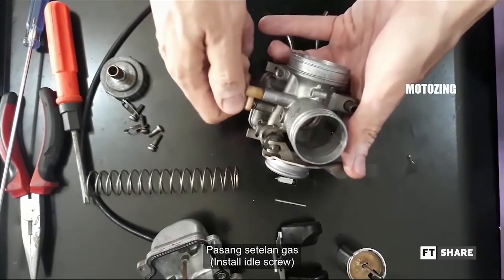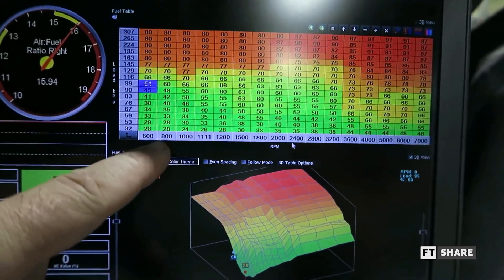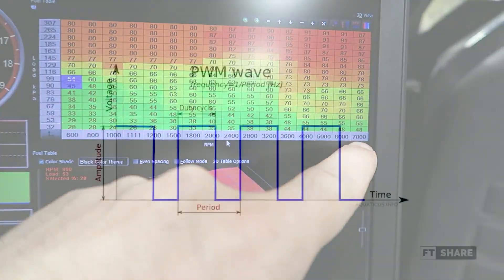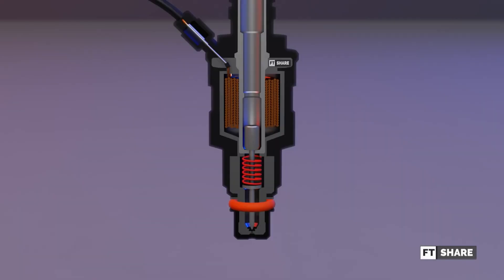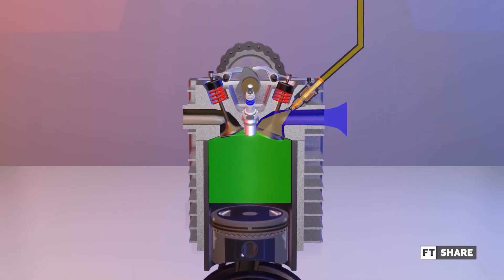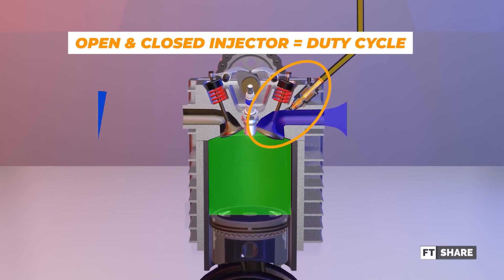In addition, injectors can still be customized like carburetors by manipulating PWM through a computer by performing remapping. PWM stands for pulse width modulation, which is used to regulate the opening and closing of the injection. In a four-stroke engine with injectors, the injection will open and close every one power cycle. As we know from the previous video about four-stroke engines, there are two engine rotations in one power cycle.